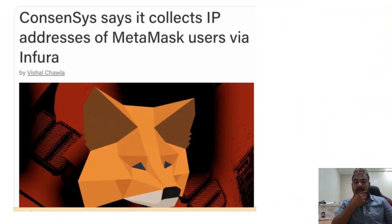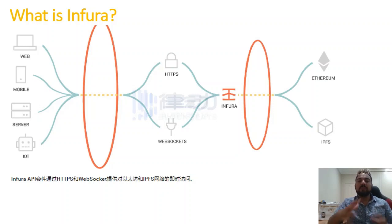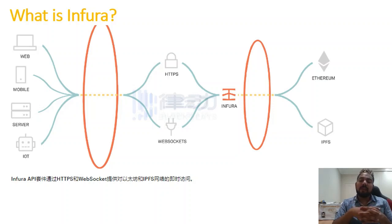So this is the news: ConsenSys says it will collect IP addresses of MetaMask users via Infura. Now before you get infuriated, what is Infura? Well, Infura is just a group of nodes — it's a company effectively — and it does a lot of other things, but pretty much it's the Ethereum nodes that you interact with when you're conducting transactions on the Ethereum mainnet. It's pretty much just a group of nodes that will interact with your MetaMask.